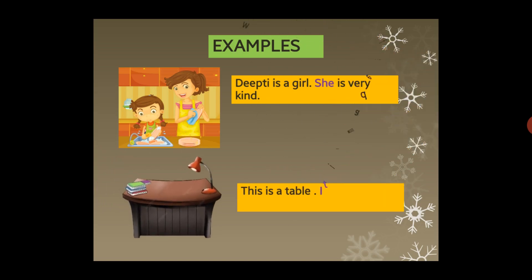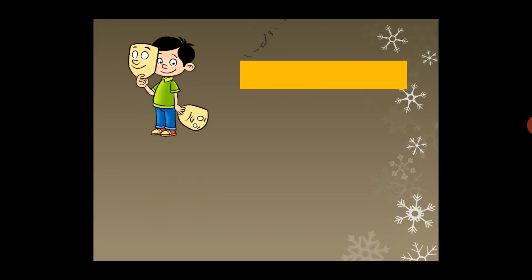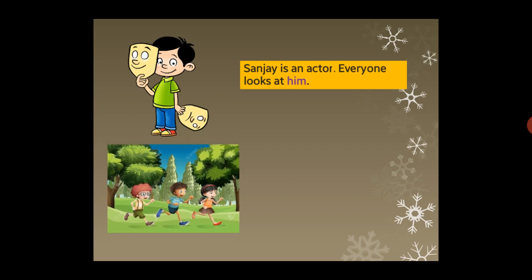This is a table — it is made of wood. When we speak about a non-living thing, we use 'it'. Next, Sanjay is an actor — everyone looks at him. So 'him' is a pronoun here.